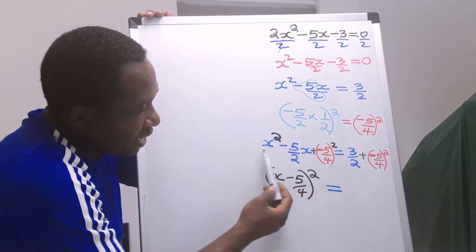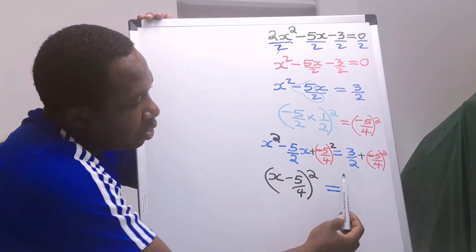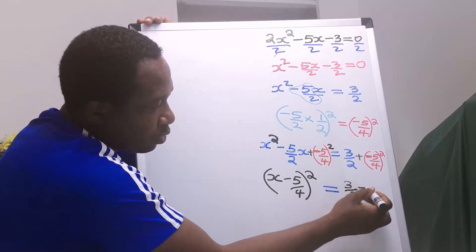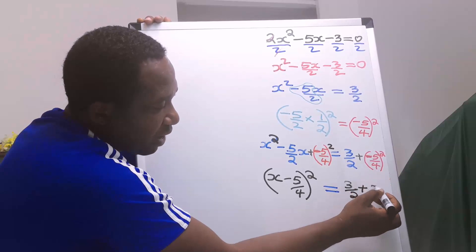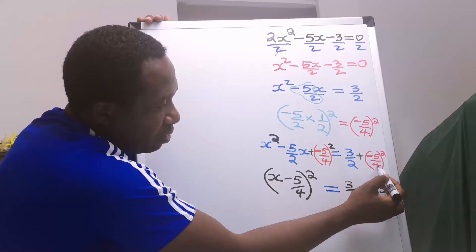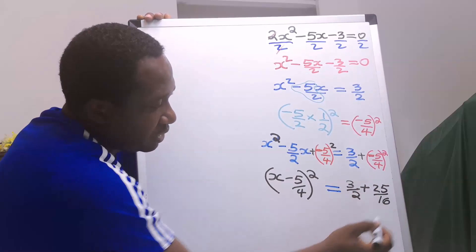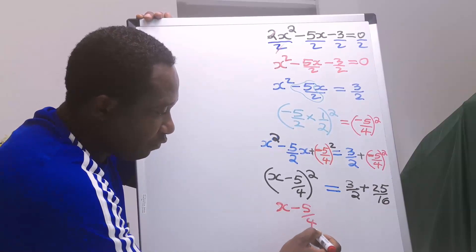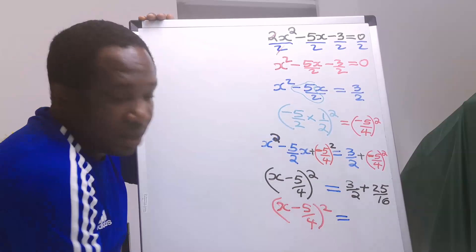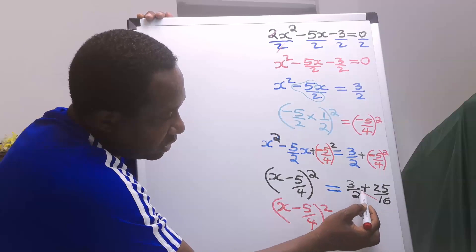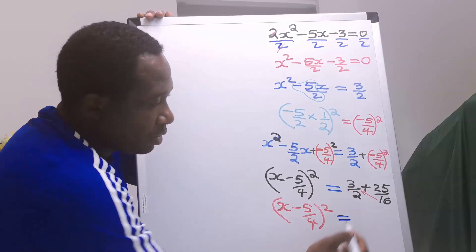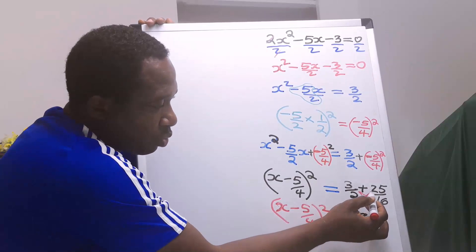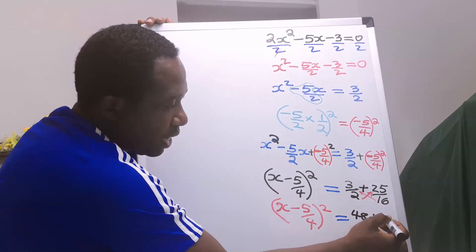Everything on the left-hand side is compressed to this. On the other side of the equal sign, we have 3 over 2, plus — minus 5 times minus 5 gives 25, and 4 times 4 gives 16. Next, we have x minus 5 over 4 in brackets, squared. On the other side, 16 multiplied by 3 gives 48. This is plus. Next, 2 multiplied by 25 gives 50.